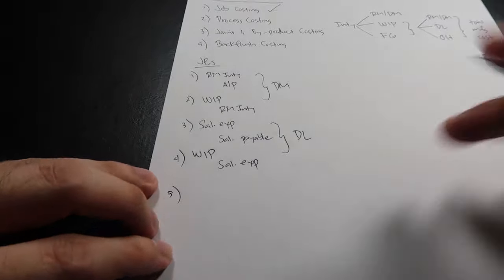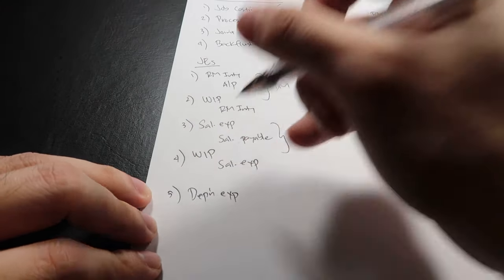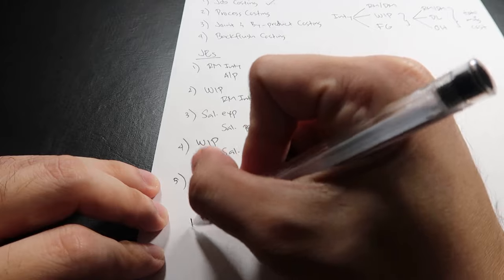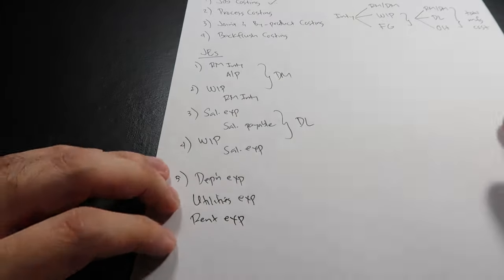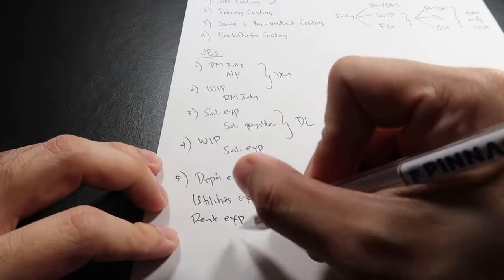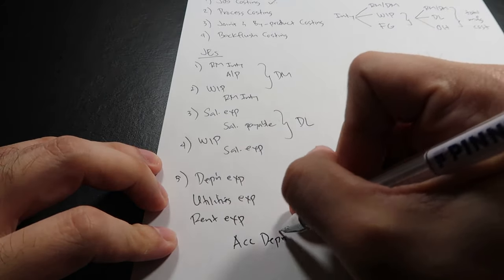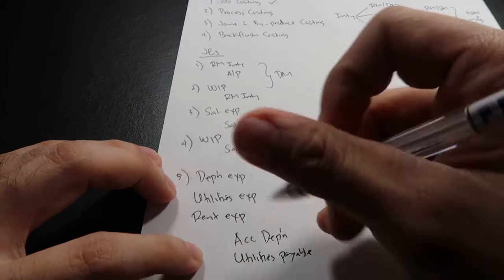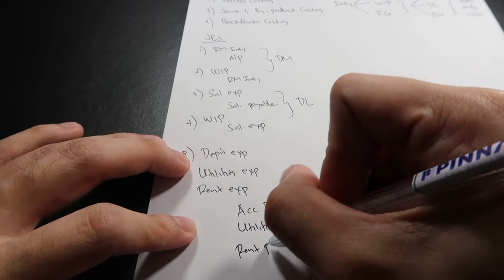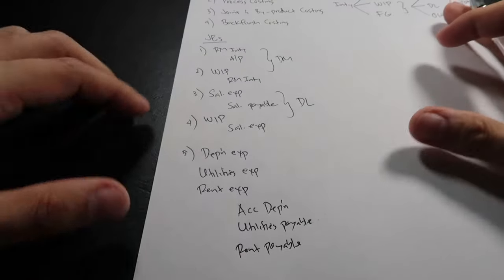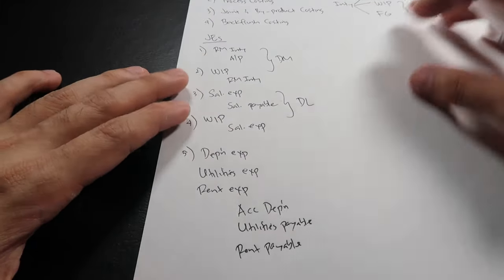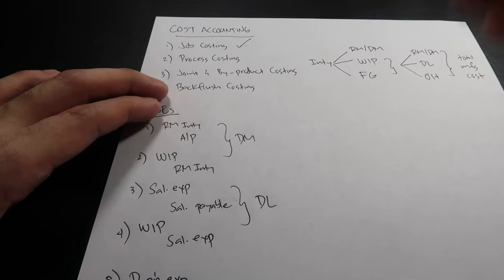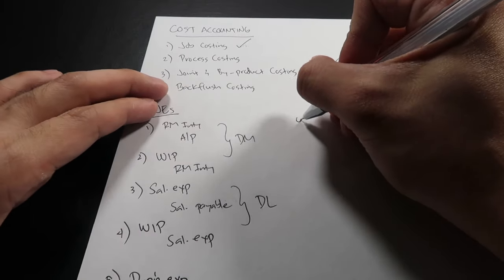For overhead, examples include utilities expense and rent expense. The partner accounts are: for depreciation expense — accumulated depreciation; for utilities expense — utilities payable; for rent expense — rent payable. This is our entry for actual overhead cost.